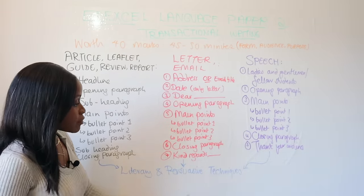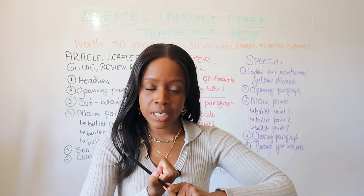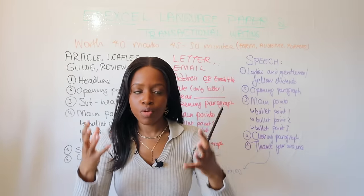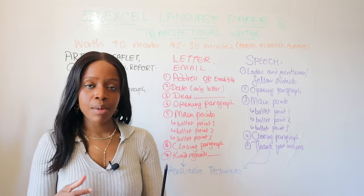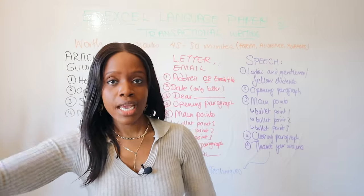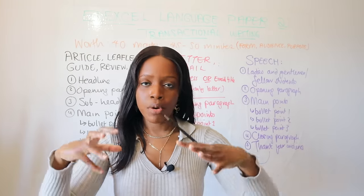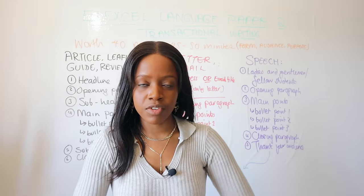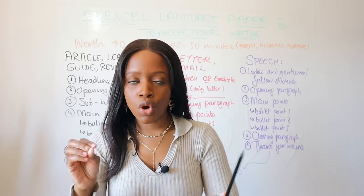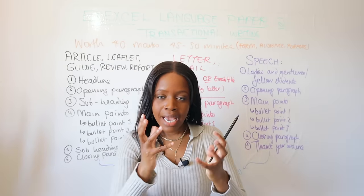There are also persuasive techniques you need to include in transactional writing to make your reader feel convinced. Persuasive technique number one: made-up statistics. The examiners understand you don't know all the statistics on every topic, so just show you know to add a persuasive element. For example: 'According to Cambridge University, 75% of people who went on holiday were really happy.' Use realistic statistics — never say 100% or 0%, because in real life there's never complete agreement or disagreement. It's always somewhere in the middle.